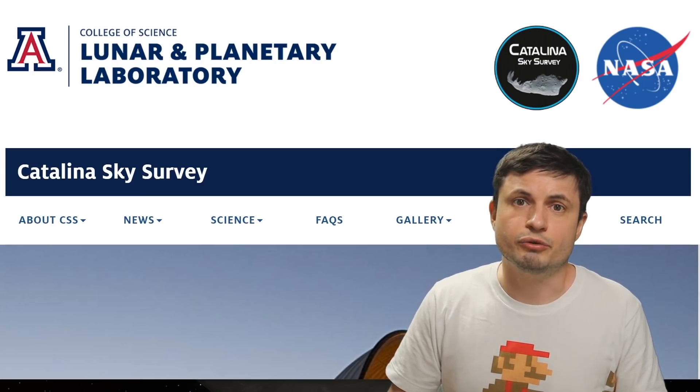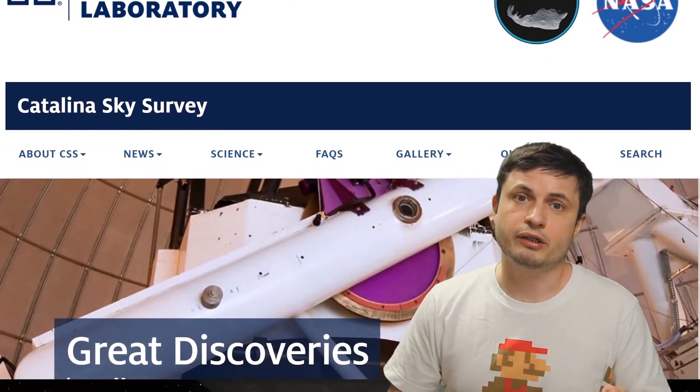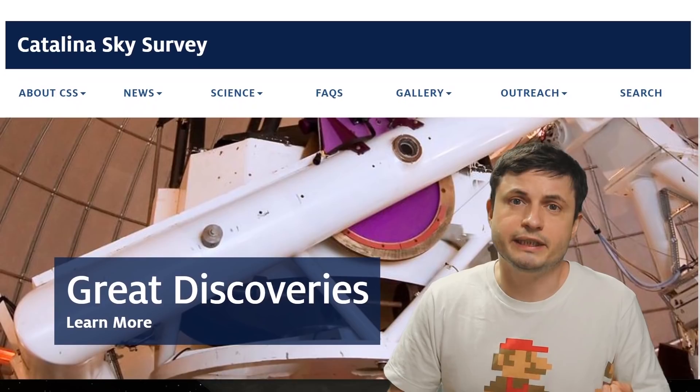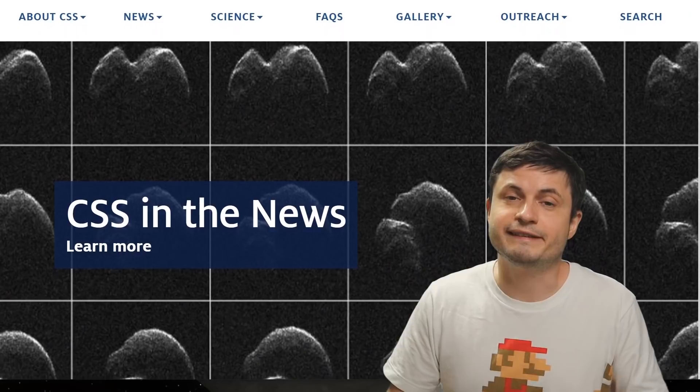So our story starts on June 2nd of 2018. The Mount Lemmon Observatory picked up an unusual rock on the way, potentially, to collide with planet Earth. But the rock was really tiny and unfortunately a few hours later, the rock was lost.